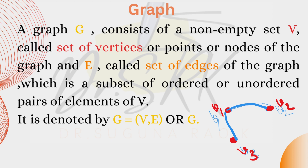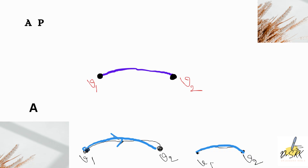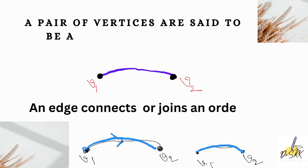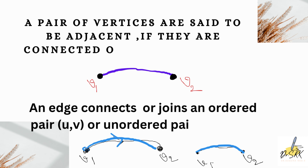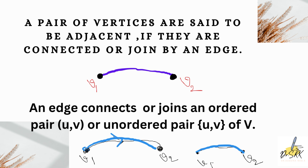Looking at the diagram, V1, V2, and V3 are the vertices of the graph, and the blue lines indicate the edges of this graph. A pair of vertices are said to be adjacent if they are connected or joined by an edge. For example, vertices V1 and V2 are said to be adjacent because they are connected by an edge — the blue line indicates the edge that connects vertices V1 and V2.